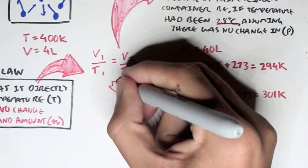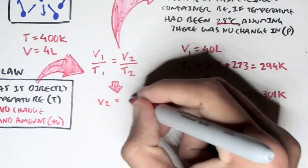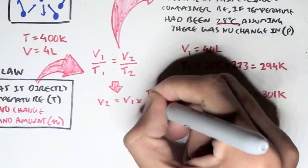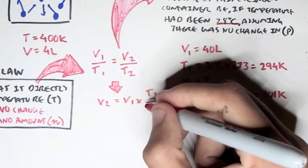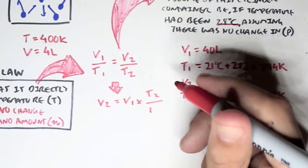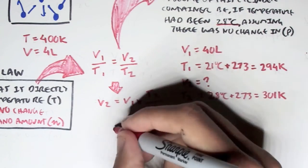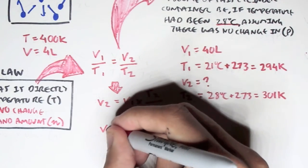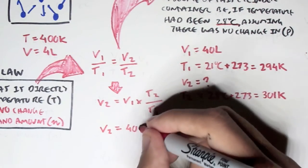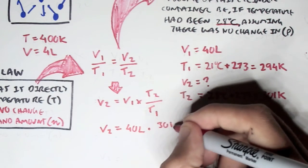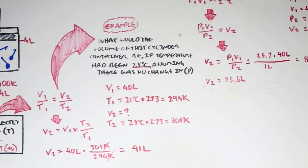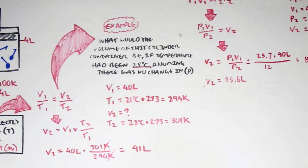Rearranging to find V2: V2 equals V1 times T2 over T1. Inserting the values: 40 liters times 301 Kelvin divided by 294 Kelvin — canceling the Kelvin units — gives us 41 liters. So at 28 degrees Celsius, the volume of the cylinder container would be 41 liters.